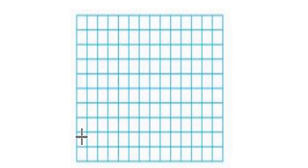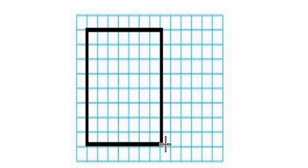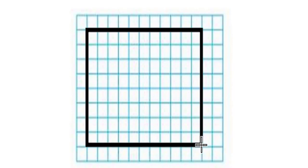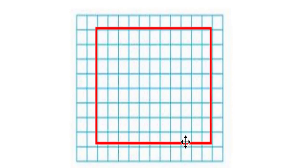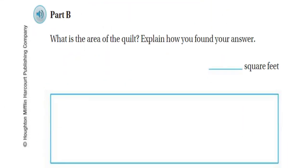For the width I need four feet, so I'll bring the rectangle in one half-foot from each side. For the length I need five and a half feet — counting out the squares: one, two, three, four, five and a half. The rectangle spans four feet wide and five and a half feet long. Your figure doesn't have to be in the exact same spot — wherever you draw it on the grid is fine. This completes part b.